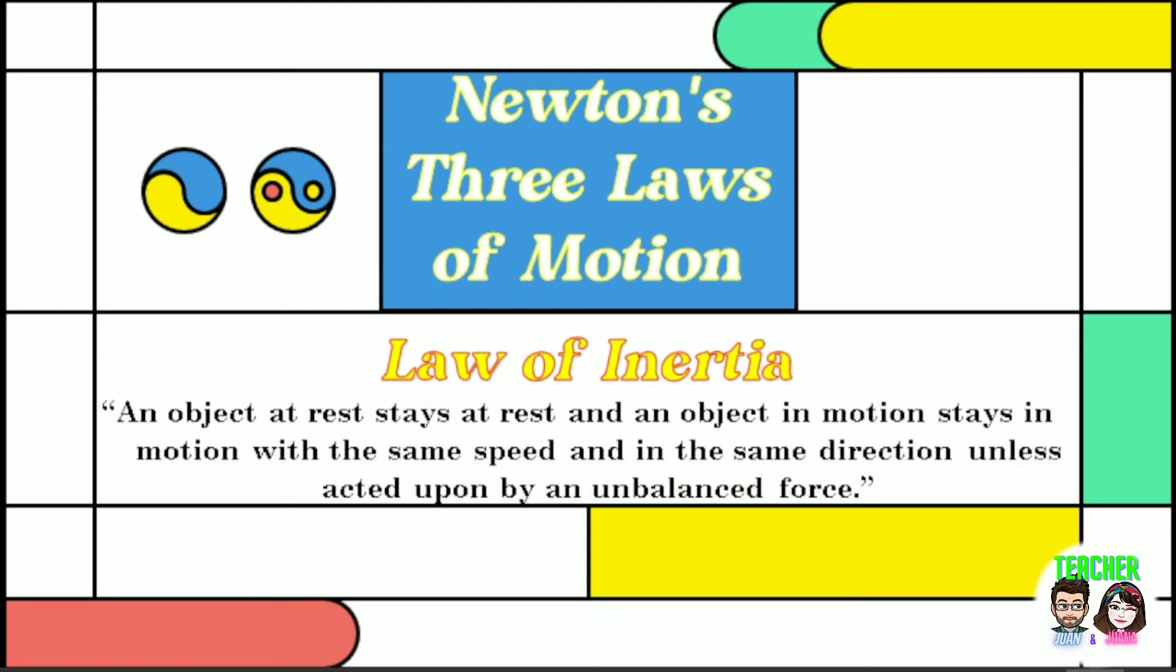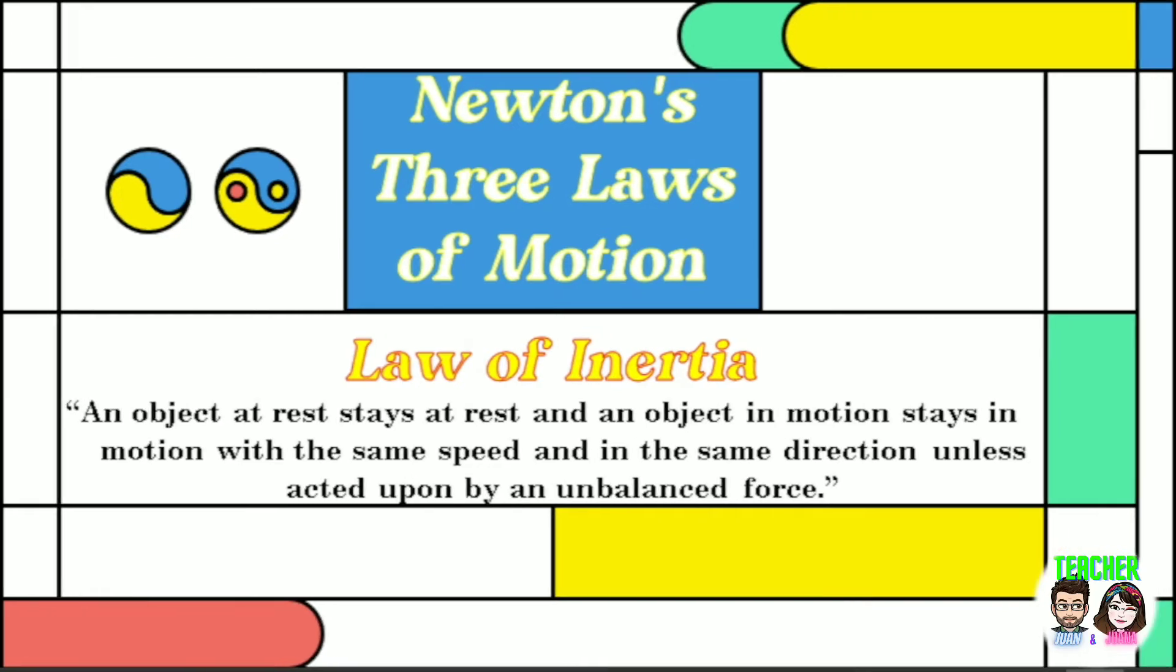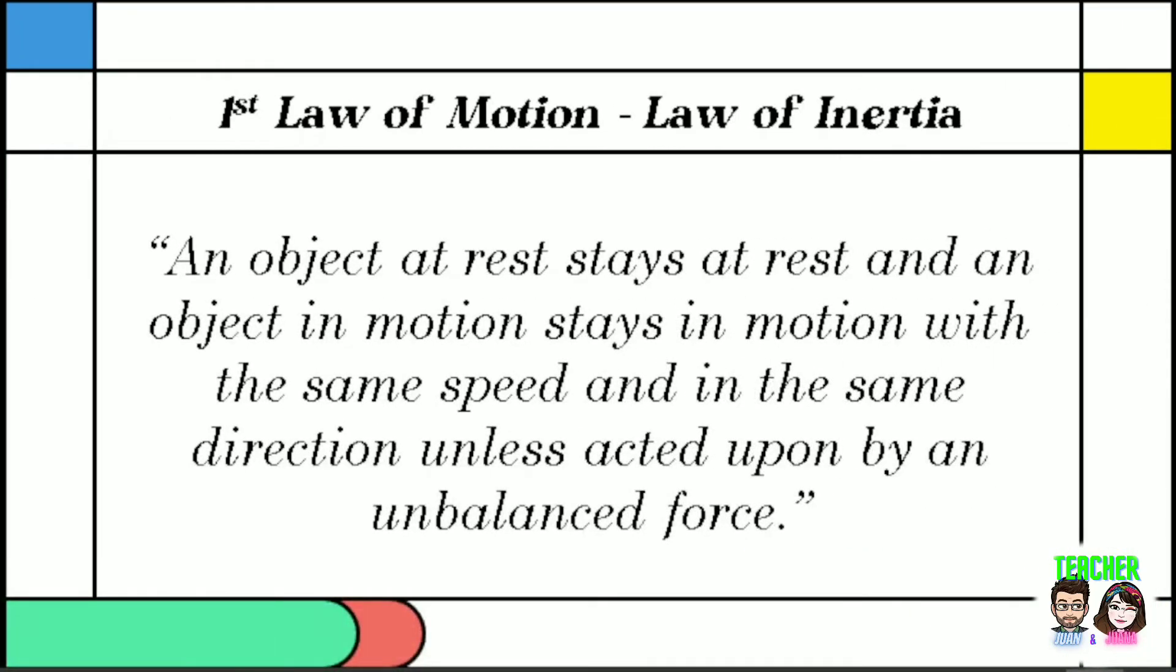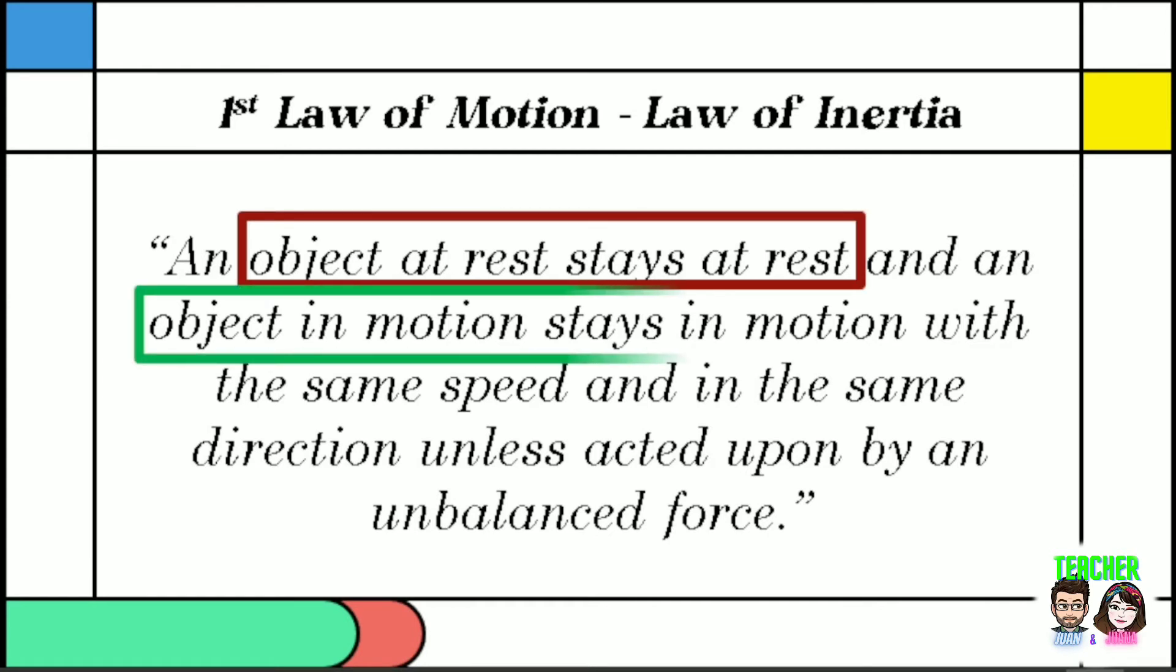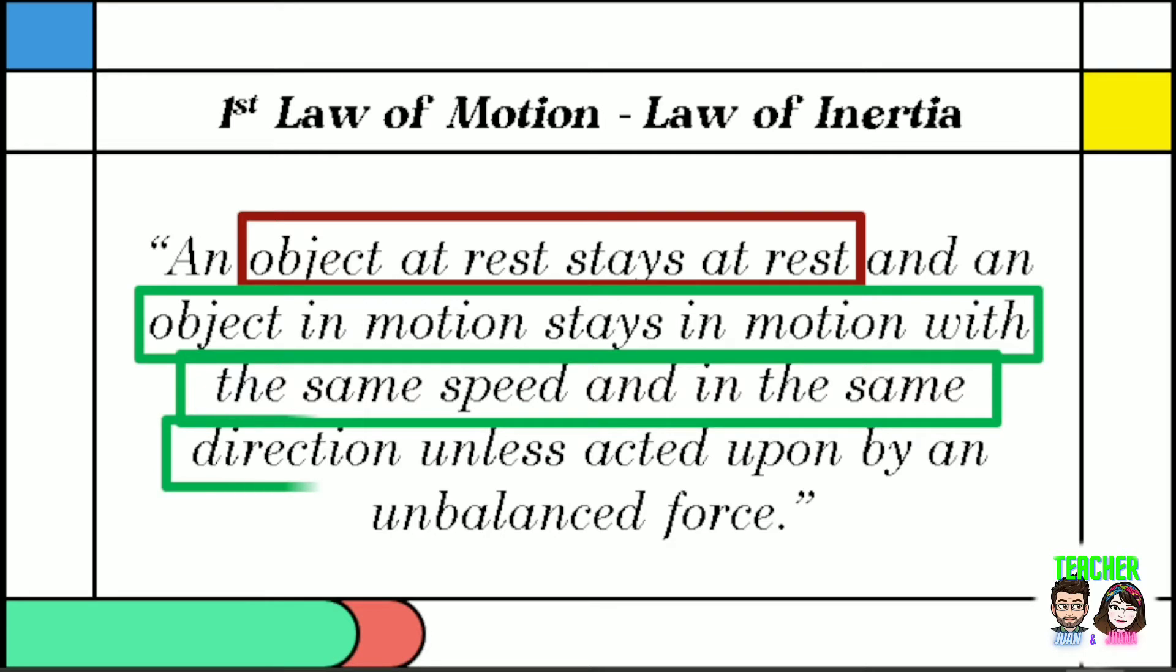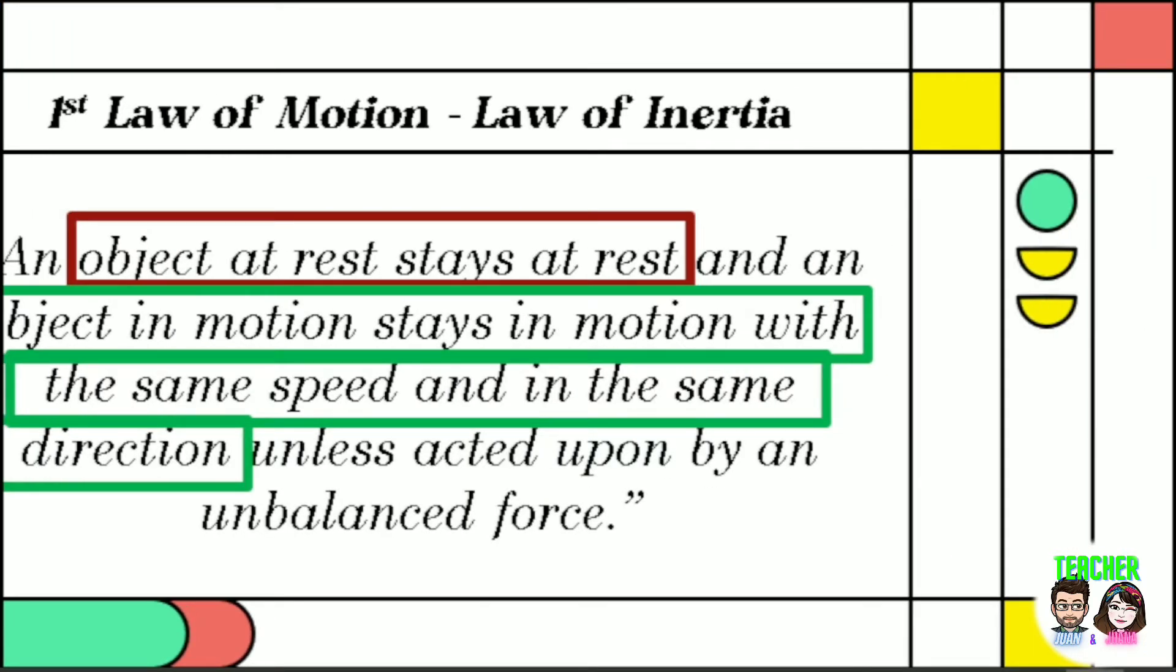Newton's first law of motion is often stated as, an object at rest stays at rest, and an object in motion stays in motion with the same speed and in the same direction, unless acted upon by an unbalanced force. There are two clauses or parts to this statement, one that predicts the behavior of stationary objects and the other that predicts the behavior of moving objects. The two parts are summarized in the following diagram.